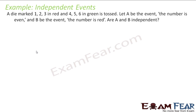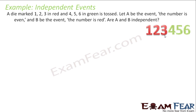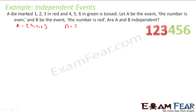Next example: A die with faces 1, 2, 3 marked in red and 4, 5, 6 marked in green is tossed. Let A be the event that the number is even, so A = {2, 4, 6}. Let B be the event that the number is red, so B = {1, 2, 3}. The question is: are A and B independent? A∩B has the common element 2 only. So P(A∩B) = 1/6. P(A) = 3/6 and P(B) = 3/6.